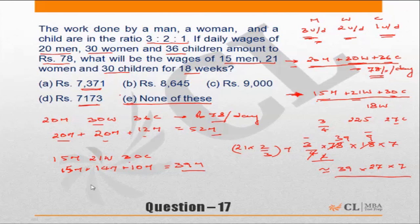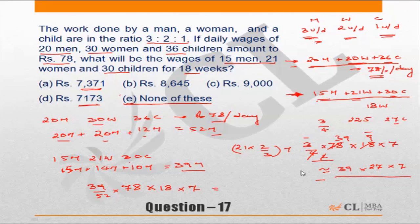So 52 men have a salary of 78 rupees per day. The salary of 39 men per day will be (39/52) into 78. Since we need it for 18 weeks, multiply by 18 weeks into 7 days. This gives the answer. This second method is faster than the approximation, but the approximation could not be used given the close answer choices.